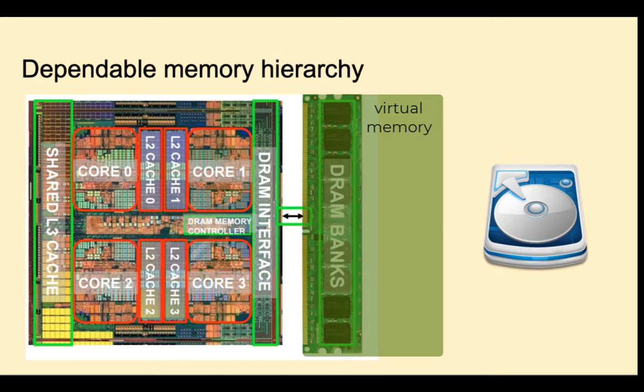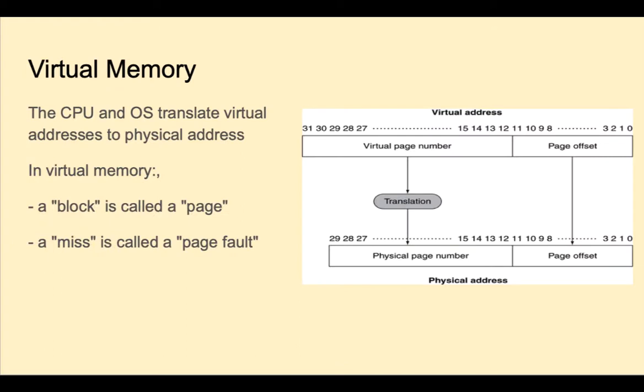Virtual memory uses main memory as a cache for secondary disk storage. This is managed jointly by the CPU hardware and the operating system. Virtual memory is organized in pages. What we called a block in the higher levels of the memory hierarchy, we call a page in virtual memory. And what we called a miss in cache, we'll call a page fault in virtual memory.